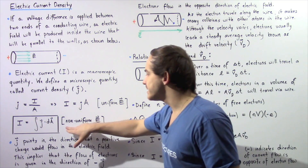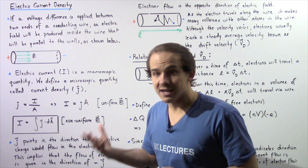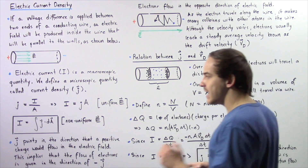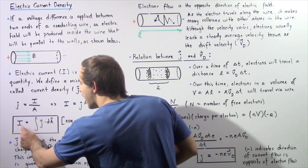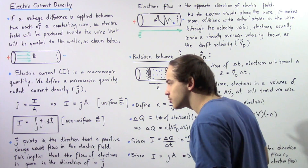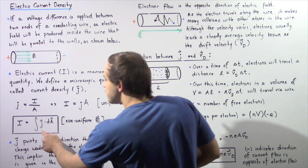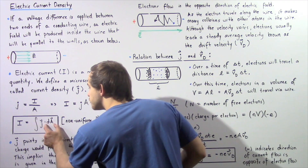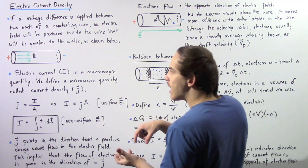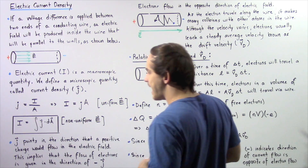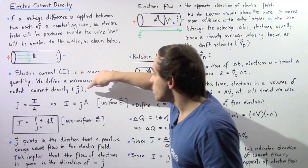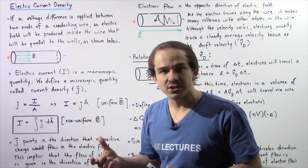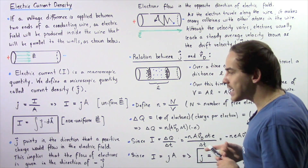If our electric field is not uniform — if it's non-constant — then we have to take the integral. In that case, our electric current I is equal to the integral of the dot product of our current density j and our infinitely small section of area dA. Notice that j, the current density, is a vector — it has magnitude as well as direction.